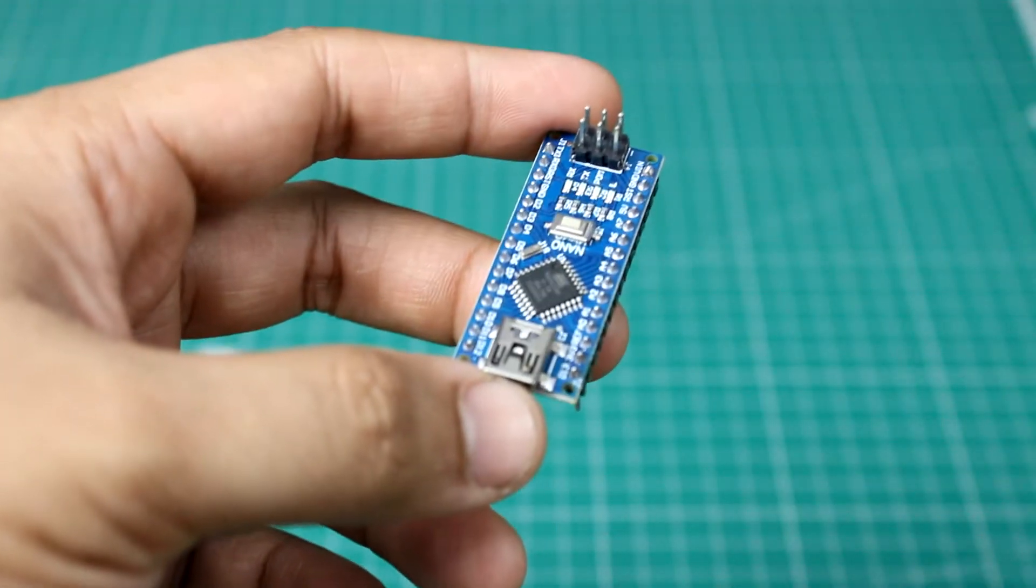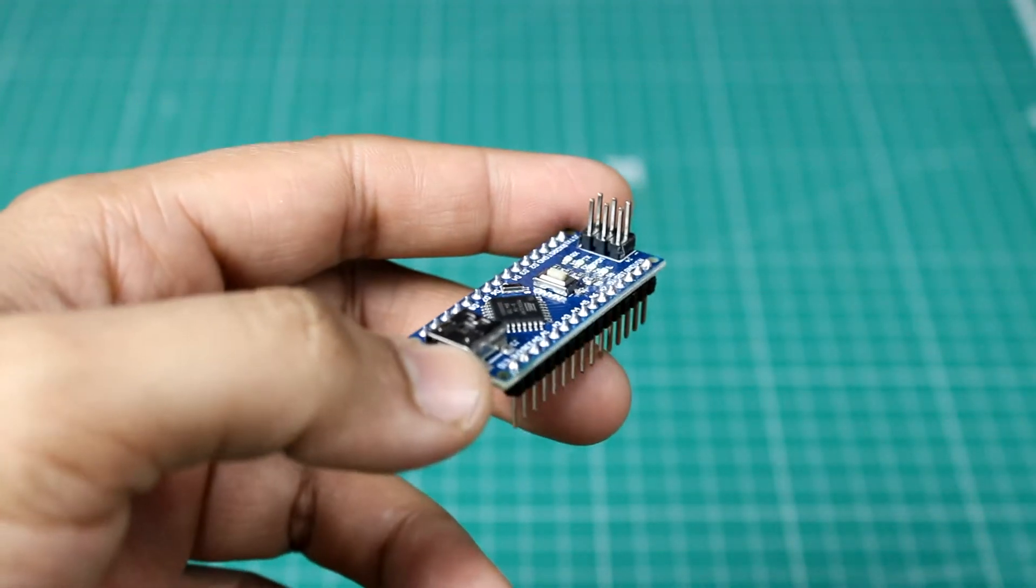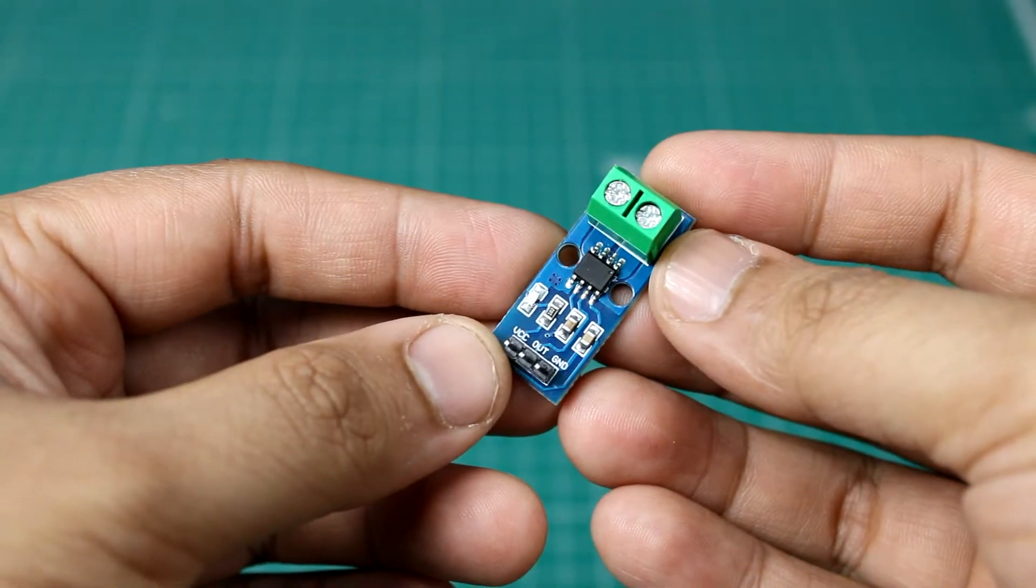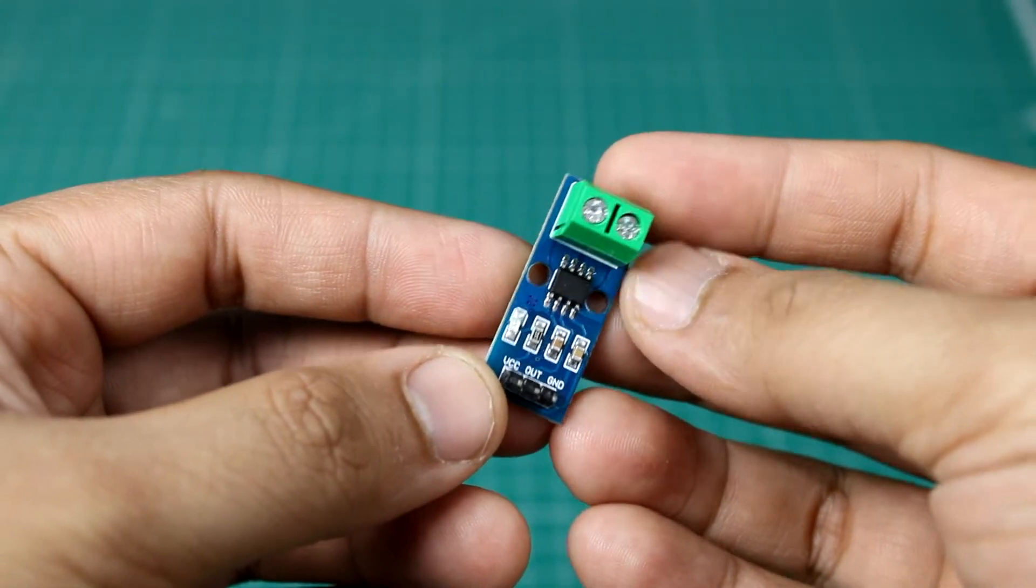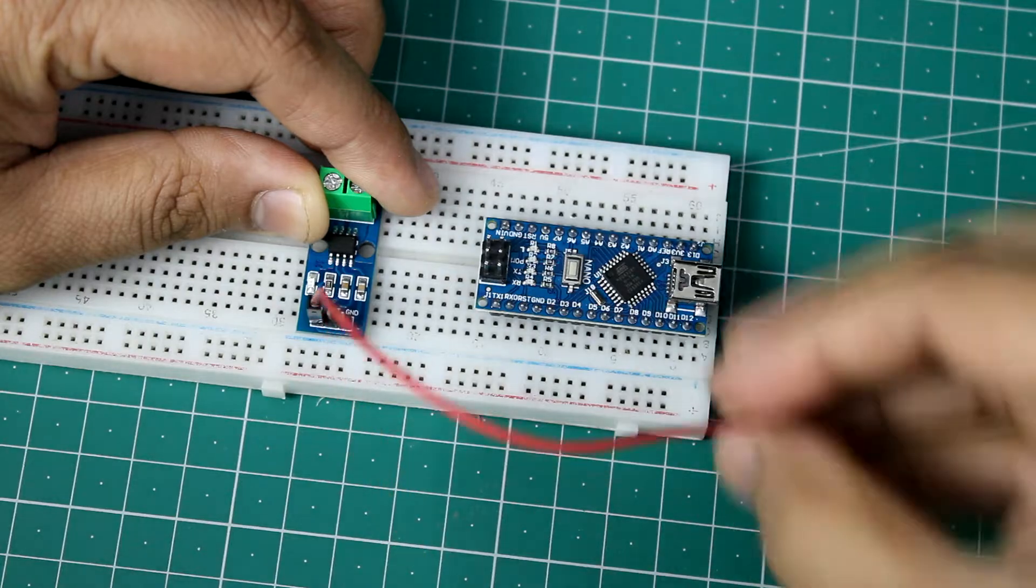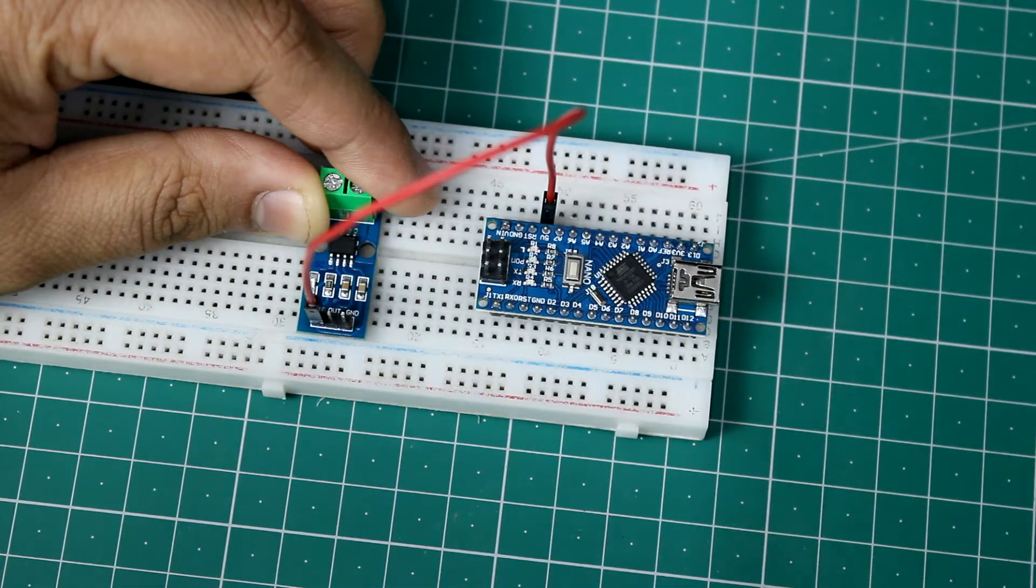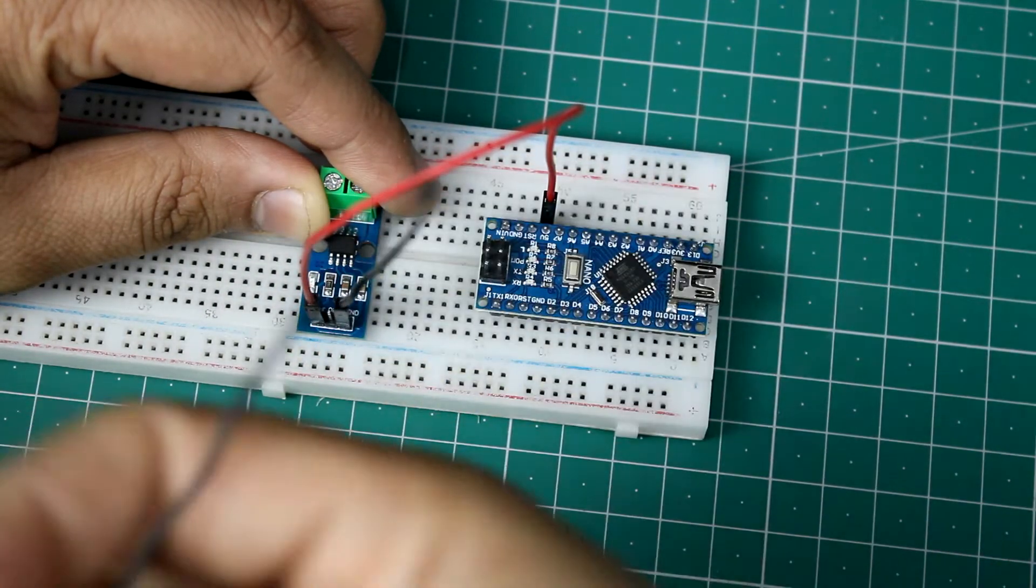At the heart of this project I have used an Arduino Nano and the ACS712 current sensor module. The sensor has three pins. Simply connect the VCC and ground pins to Arduino 5 volt and ground.